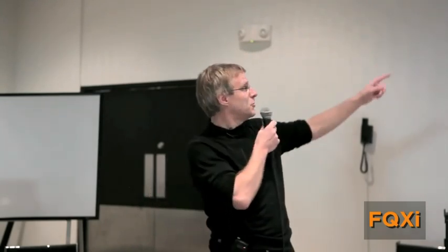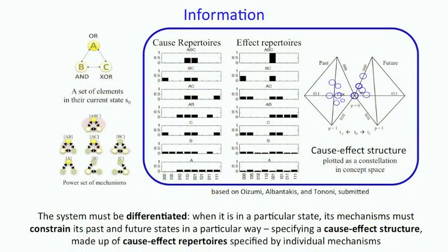Well, by the mere fact of being those mechanisms and being in that state, they will have an intrinsic property, which is that of constraining the past and the future of the system. And those probability distributions, the cause repertoire and the effect repertoire, as you can calculate, it is basically, if I am, for instance, you can take A, an OR gate, and I am ON at the very bottom, then I'm going to constrain the past of the system in a certain way, and I'm going to constrain the future in a certain way. I don't need to do anything. It's just because I am an OR gate, and I am ON. And this is true combinatorially for all subsets of the system. So information is how you, from the intrinsic perspective, constrain the past and the future.